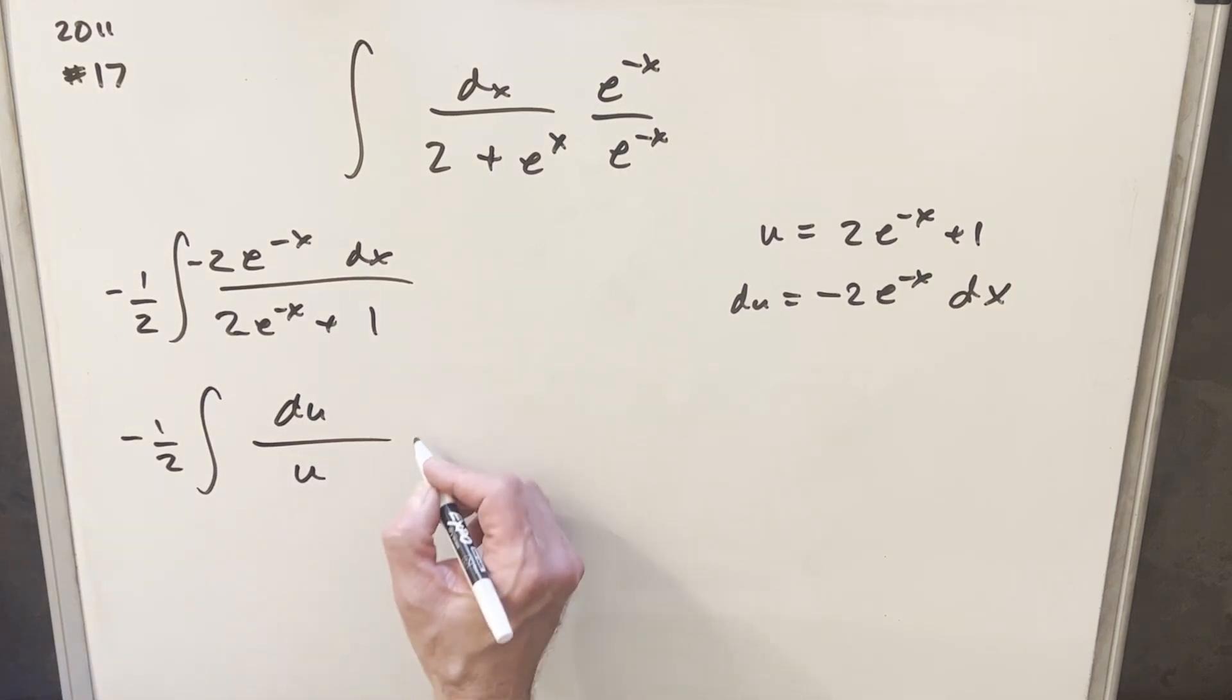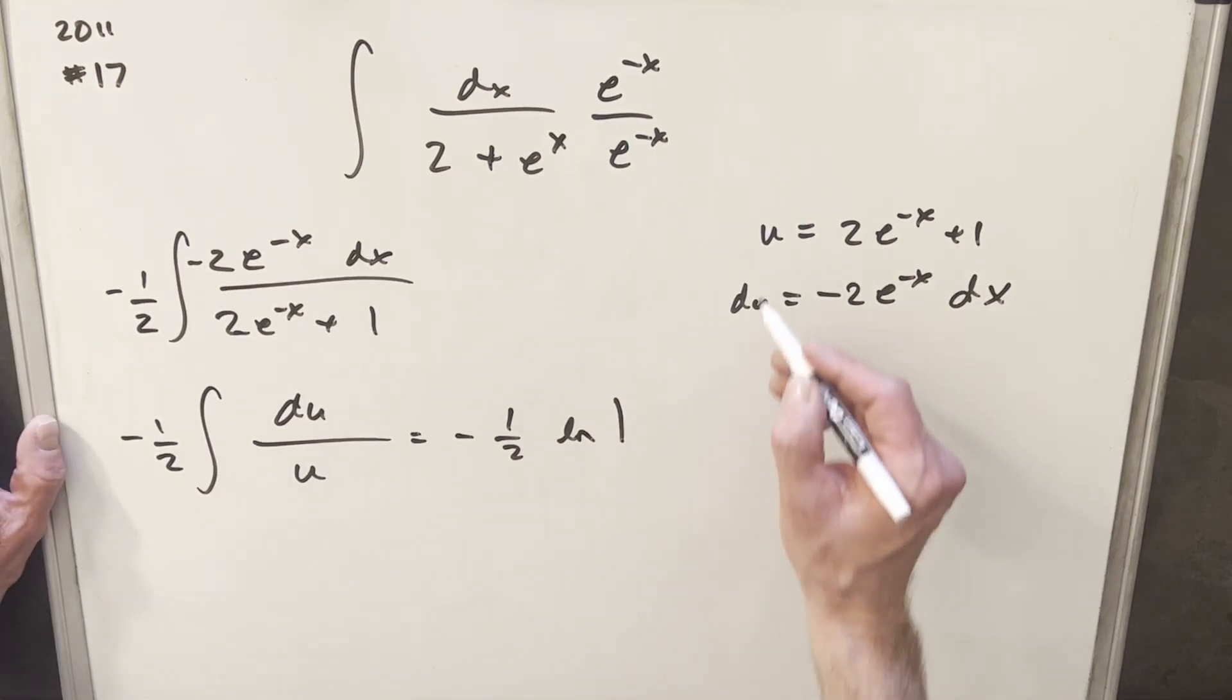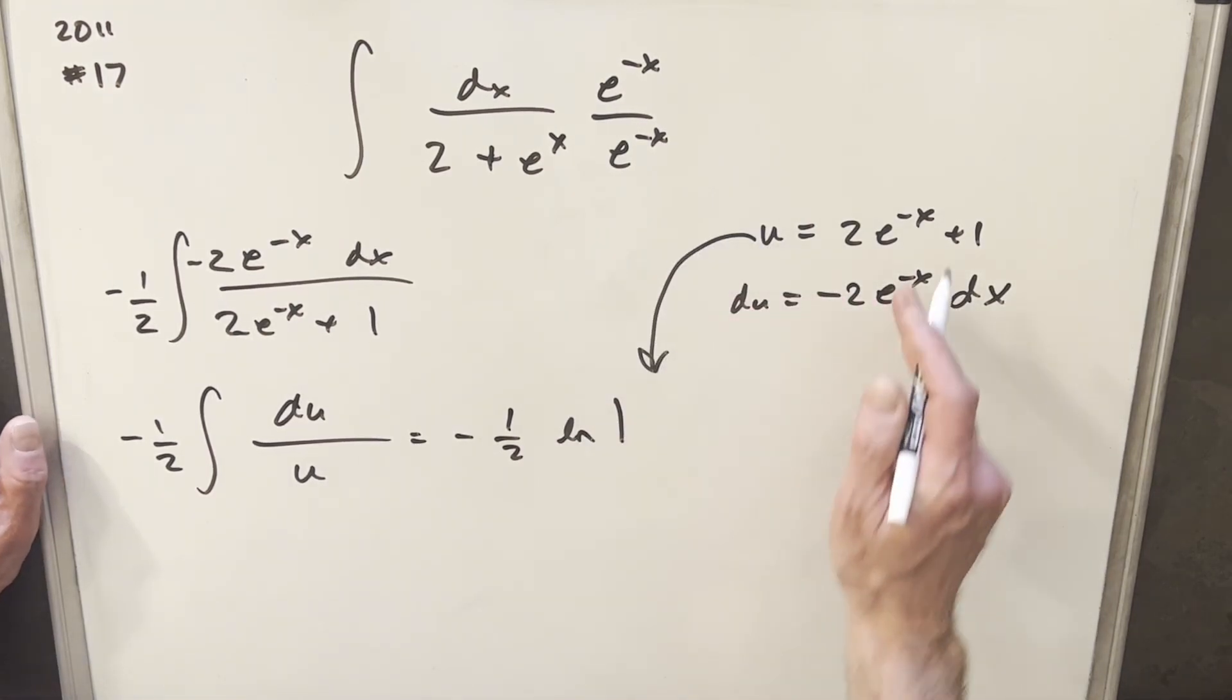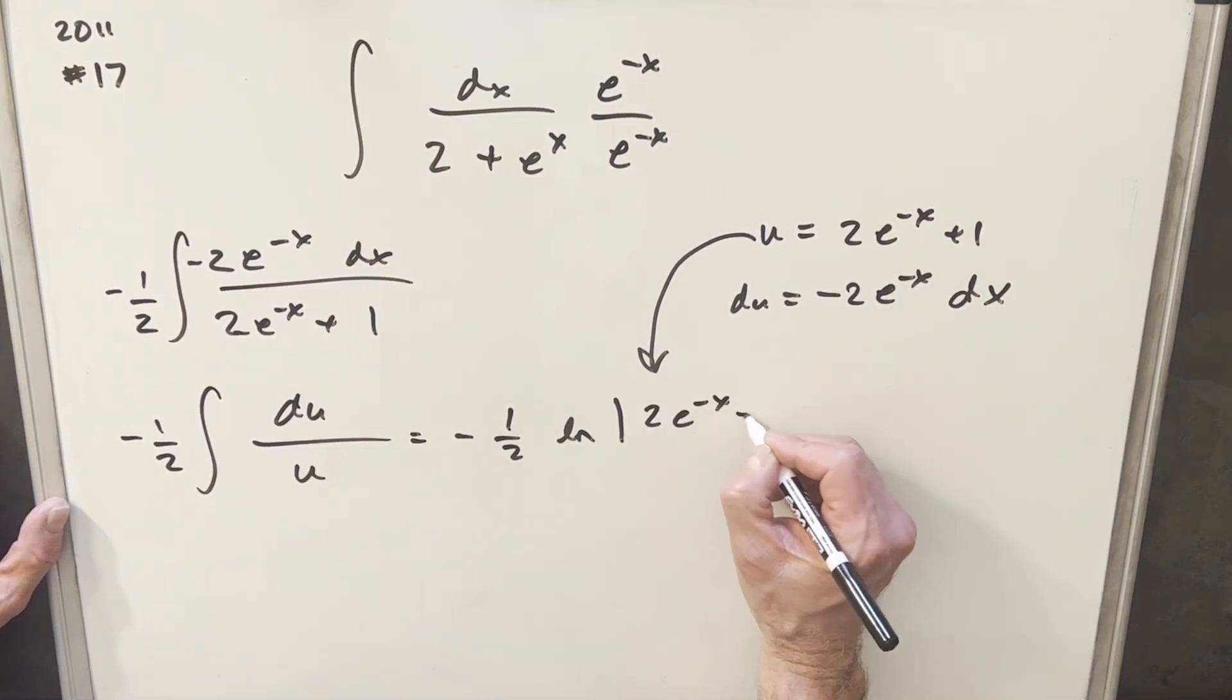And that's perfect because this is going to be natural log of u. So we're going to have minus 1/2, natural log, absolute value. And I think what I'll do is just back substitute in one step. So we'll just write in our u right away. So here we're going to have 2e^(-x) plus 1, absolute value, plus c.